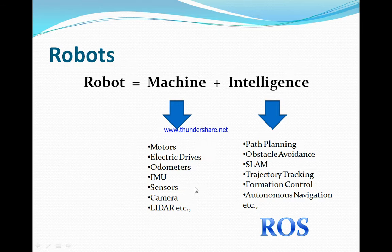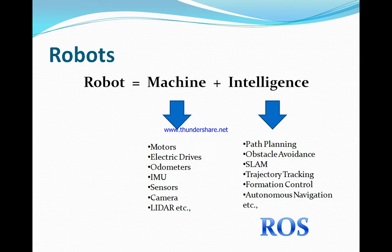A robot needs to be intelligent. For example, a self-driving car — I have to start from here and go to there, so how do I plan the path? The robot needs to be intelligent to plan the path. You should also know where you are, for that you need localization and mapping algorithms, trajectory tracking, and formation. All this intelligence can be built using ROS.